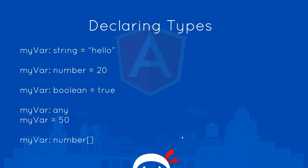When we declare a variable, we can also declare the type of that variable in TypeScript. We don't have to, but we often do. For example, if we want to declare a variable which is a string, we could say the variable name, colon, then string — which is the type — and then set it equal to a value. Same for a number: just colon, number, equal to 20. And same for a boolean and any other type as well.